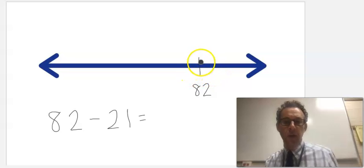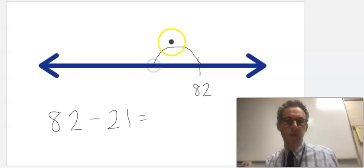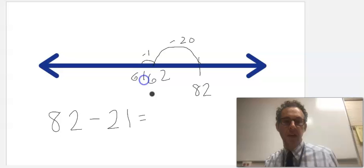And I'm going to subtract 21. I'm going to start by subtracting a big jump. I'm going to subtract 20 first and get me to 62. And then I have one more number to subtract. A small jump there gets me to 61. 82 minus 21 is 61.